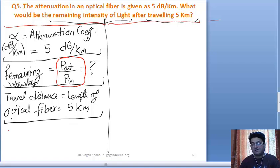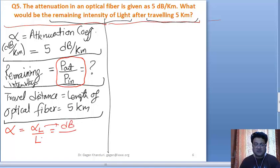These are the three things which we were given, and we are asked to find out P_out by P_in. Let's write whatever formulas we know. We know that attenuation coefficient alpha L is given as alpha times L.